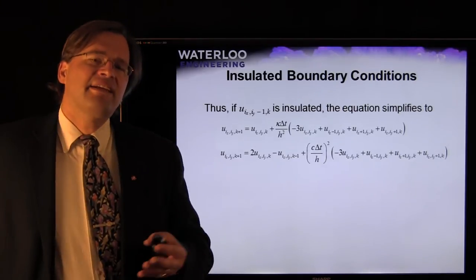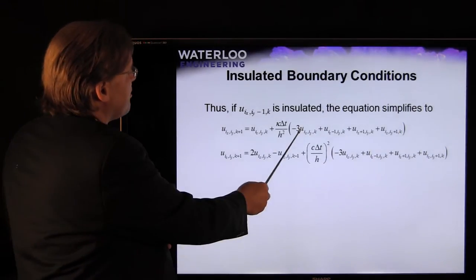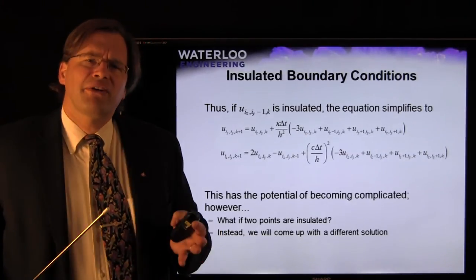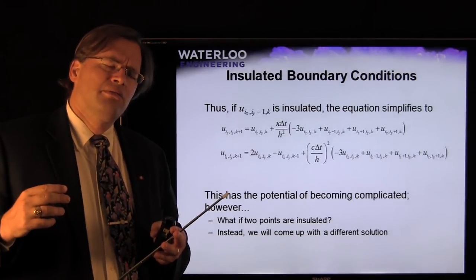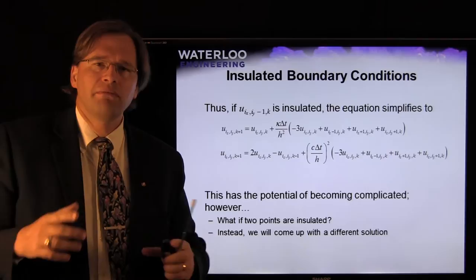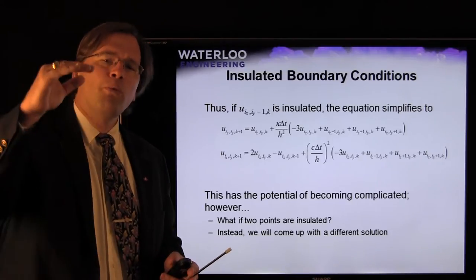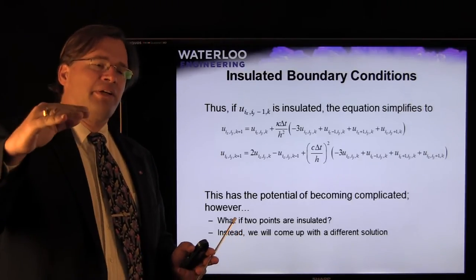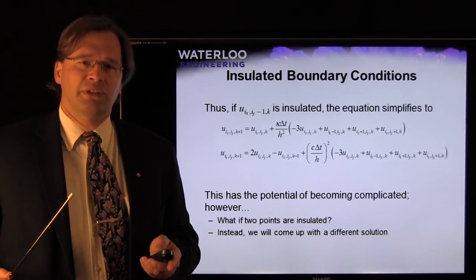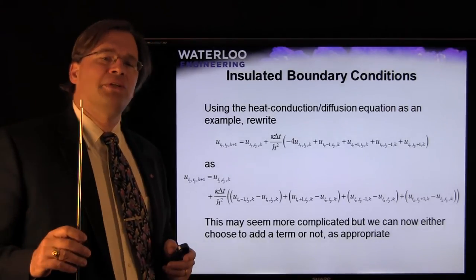If we take the heat conduction diffusion equation and substitute an insulated boundary condition, we get a slightly different equation — a negative three instead of negative four, and one term is missing. That could get very complicated: imagine two insulated boundary conditions at a corner, or three insulated boundary conditions at the end of a hall. This is going to become very complex very quickly, and it sounds as if we may require a whole bunch of if statements — one insulated boundary condition on one side, then check the other. It could become disastrous.